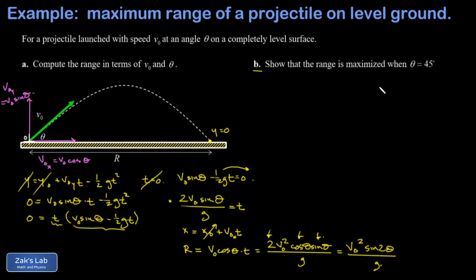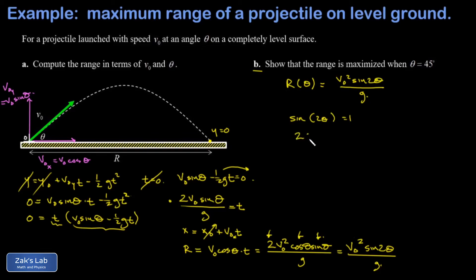Range as a function of launch angle is R = V₀² sine(2θ) over G. To find the angle that maximizes this, I don't even need calculus — though you could differentiate with respect to theta and set the derivative to zero. It's as simple as recognizing that the maximum value of the sine function is 1. Range is maximized when sine(2θ) = 1, which means 2θ = 90°, so the optimal launch angle is 45 degrees.